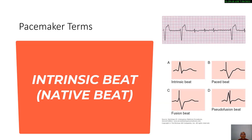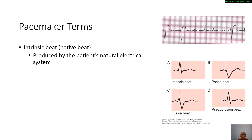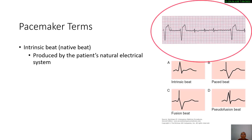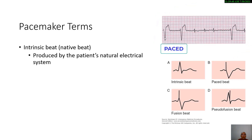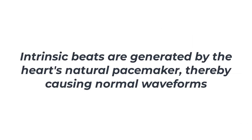The next term is intrinsic beat, also known as a native beat — spontaneous ECG beats produced by the patient's natural electrical system. A pace beat is identified by a spike followed by a QRS complex. In contrast, narrow QRS complexes without a preceding spike reflect a natural or intrinsic beat. That is the difference between a pace beat and an intrinsic beat.